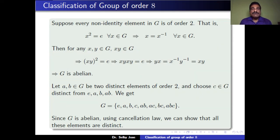Suppose we assume that all non-identity elements of G have order 2. That means x squared equals identity for all x in G, or equivalently x equals x inverse for all x in G. Then for any x, y in G, since xy is also in G, the order of xy is also 2, meaning (xy)² equals identity. This gives xy·xy = identity, so yx = x inverse · yx = xy, since x inverse equals x. Therefore, for any x and y in G, xy equals yx, and so G is abelian.